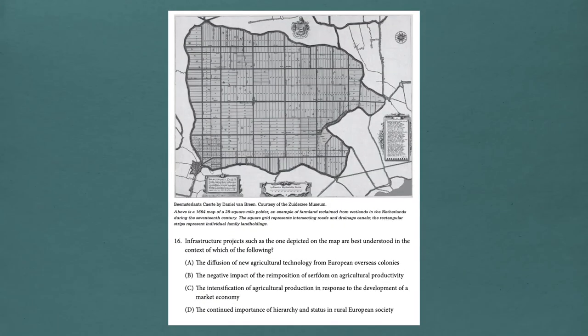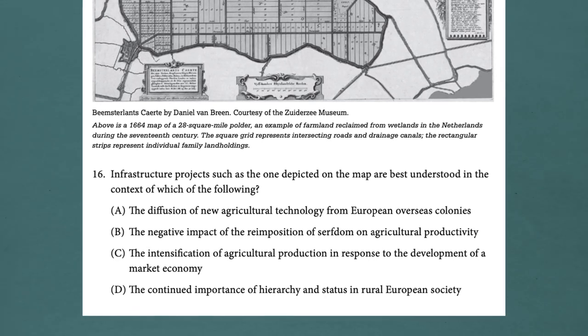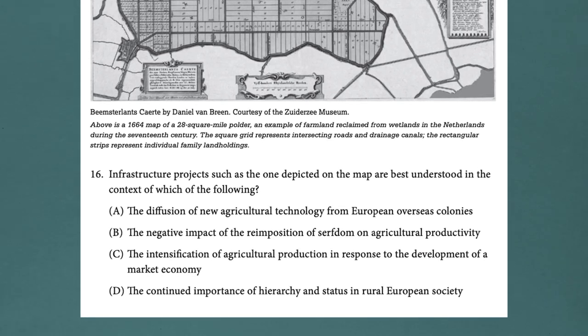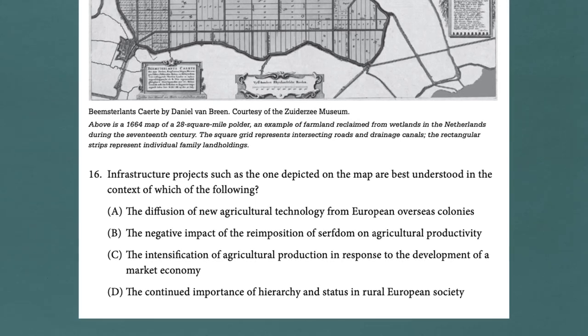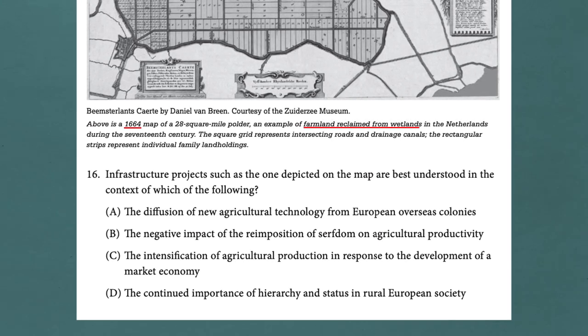The next kind of stimulus you're going to see is a visual stimulus — you see that right here in this map. The most important part is, not surprisingly, the attribution. It tells you everything you need to know: above is a 1664 map of a 28 square mile polder, an example of farmland reclaimed from wetlands in the Netherlands during the 17th century. The square grid represents intersecting roads and drainage canals; the rectangular strips represent individual family landholdings. I'm going to underline 1664 and 'farmland reclaimed from wetlands.' Don't get confused by the map — you know everything you need from what you read. You could answer the following question without even looking at the image.